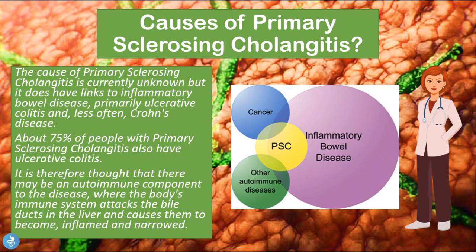Now that we know the basics of the disease and its symptoms, let's talk about the causes. The cause of PSC is currently unknown, but it does have links to inflammatory bowel disease, primarily ulcerative colitis and less often Crohn's disease. About 75% of people who suffer from PSC also have ulcerative colitis. It is therefore thought that there may be an autoimmune component, where the body's immune system attacks the bile ducts in the liver and causes them to become inflamed and narrowed.